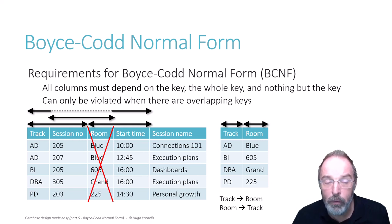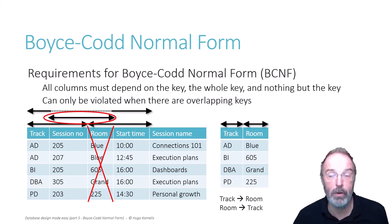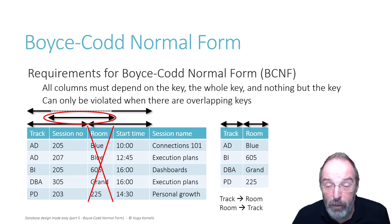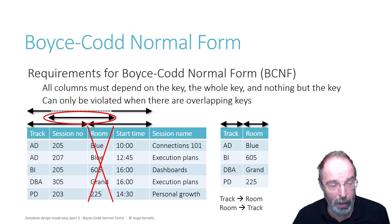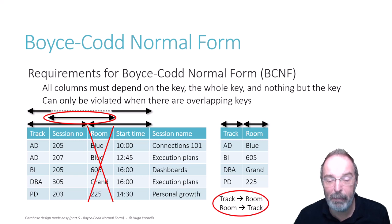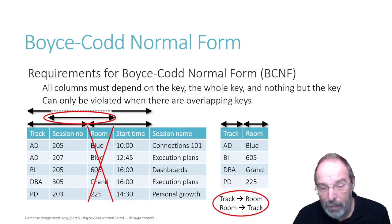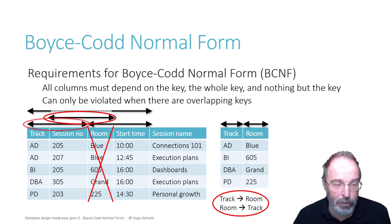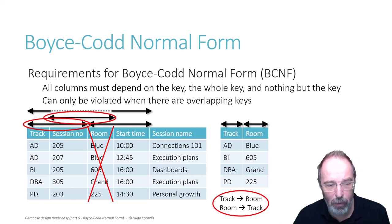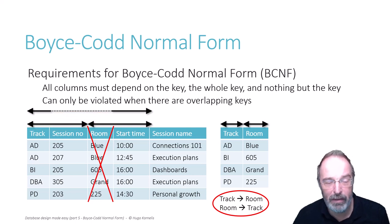Now I cannot just remove the room column because it is included in a key constraint. If I just removed the room column, then that key constraint would be on session number only, and suddenly we would no longer allow both session AD205 and session BI205 to exist. But we should also not just drop a key constraint. In fact, in this case we can, because remember why we added this constraint — it is implied by the other constraints plus the business rule that track determines room and room determines track. The constraint on track and session number plus the functional dependency track determines room implied a key on session number and room. Because this key is implied, it cannot be violated anyway, so we don't hurt anything if we remove it.